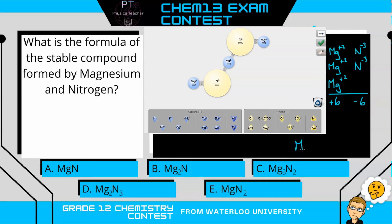So we want three magnesiums and two nitrogens to get magnesium nitride. The answer is C.